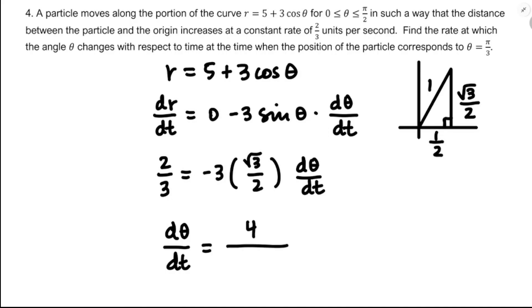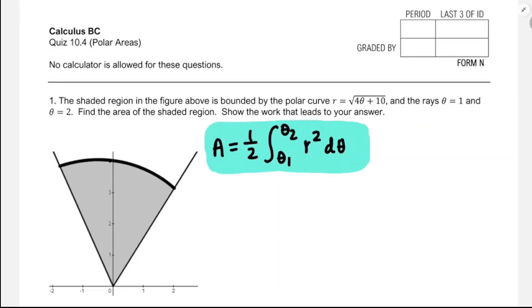Drawing the trig diagram: pi over three is 60 degrees, the hypotenuse is one, the short leg is one-half, and the long leg is root three over two. Sine is opposite over hypotenuse, so sine of pi over three equals root three over two. Solving for d-theta/dt gives four over negative nine root three. That was the most common correct answer when we graded this quiz, and anything equivalent should earn full credit.